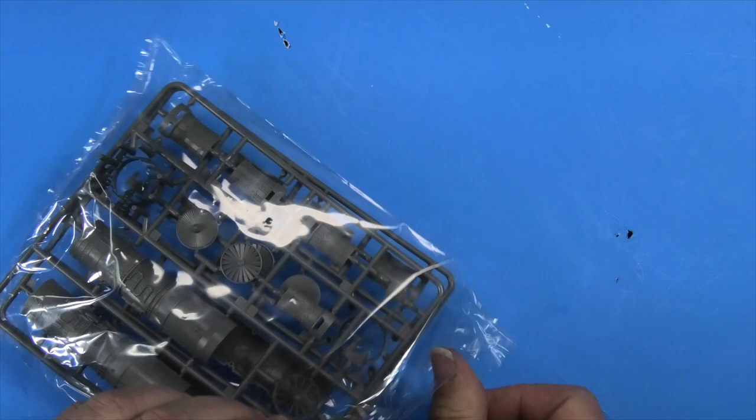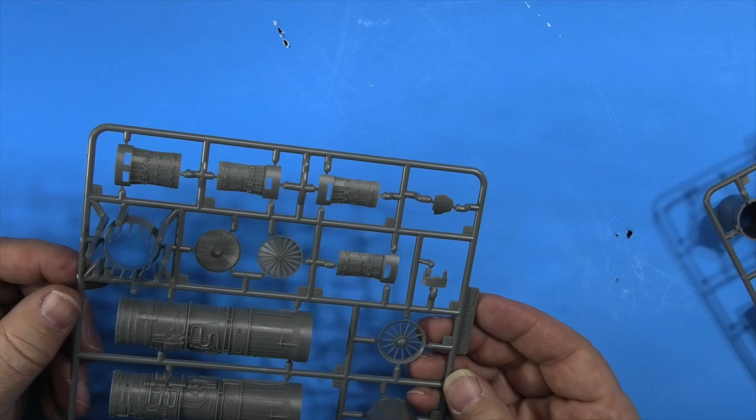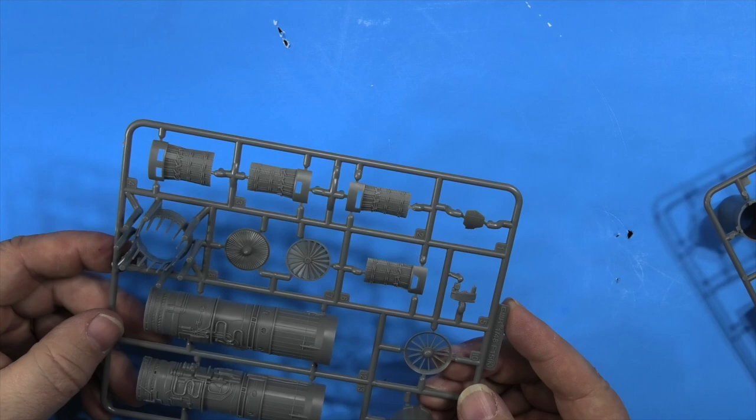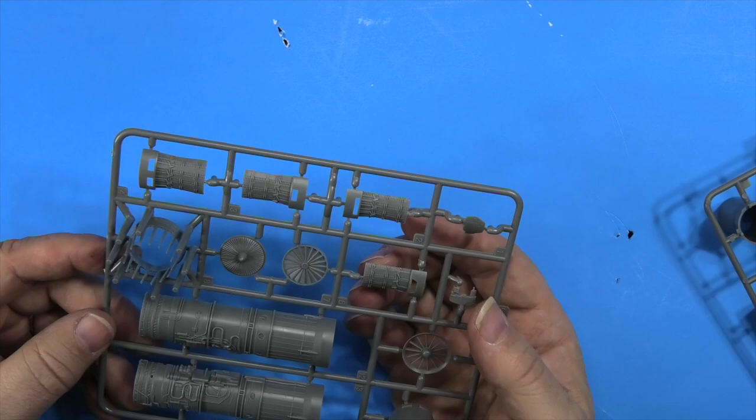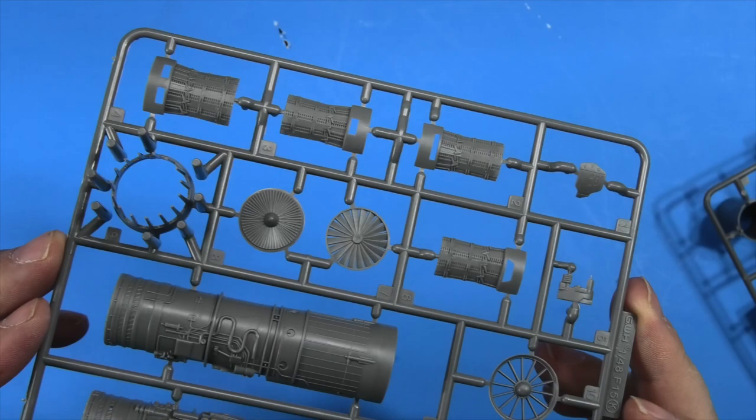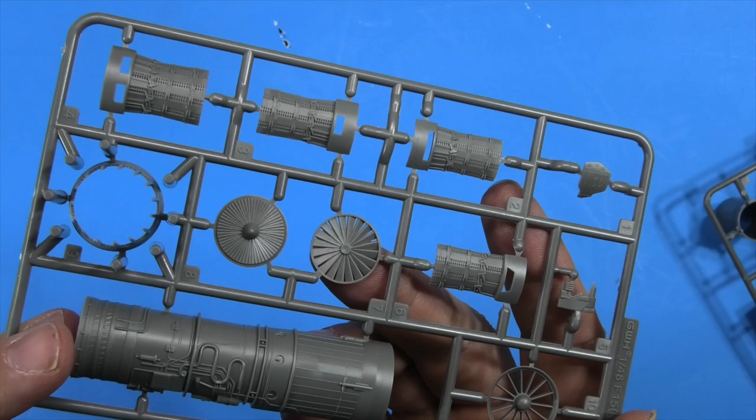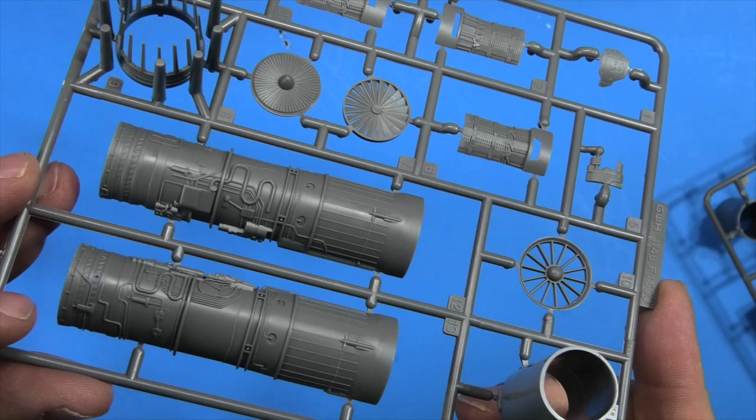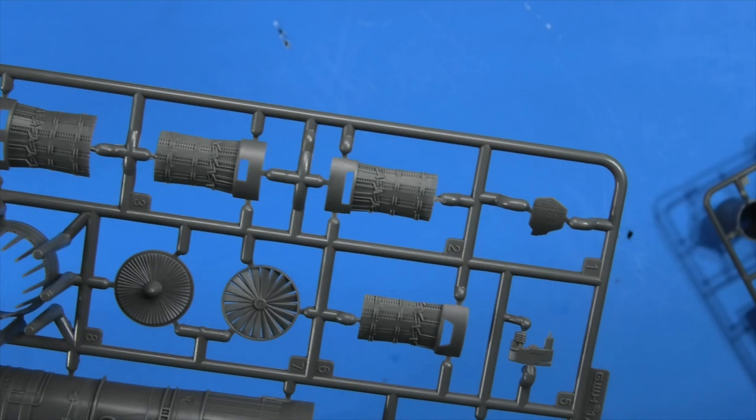We're going to look at some engines next. Looks like some good slide molding detail. Now most of this base kit is from 2013, 2014. Really nice engine detail. Your open compressor blades, afterburner ring. Slide molding all around. These are matching sprues so we don't need to look at both of them. But you can see your open compressor blade. Very nice detail there. I'll put four of those together.